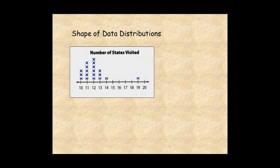This line plot shows the number of states visited by students in a class. The data are not symmetric. In this case, calculate the median and interquartile range to describe the center and spread of the data. Excluding the outlier, the median is 12.